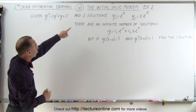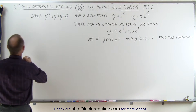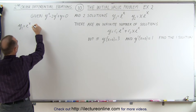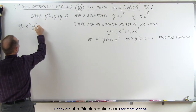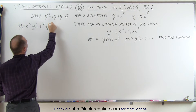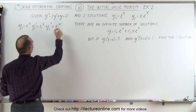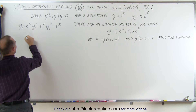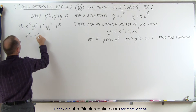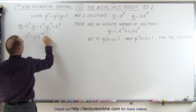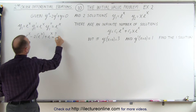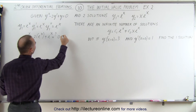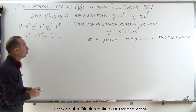First, let's show that those are indeed solutions to the differential equation. If y1 equals e to the x, then y1' equals e to the x, and y1'' equals e to the x. When we plug those into our equation, we get e to the x minus 2 times e to the x plus e to the x. That is indeed equal to 0 — we have twice e to the x minus twice e to the x. So y1 is indeed a solution.